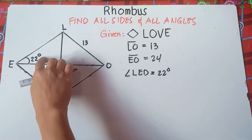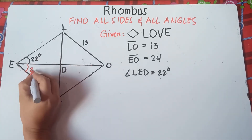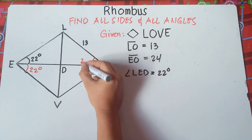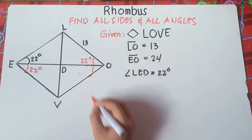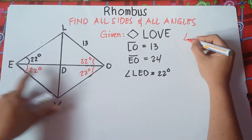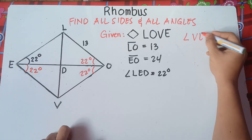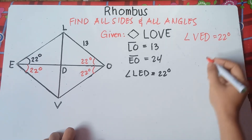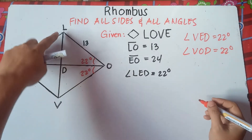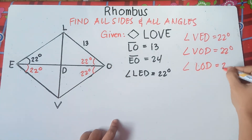So therefore, if this is 22 degrees, this angle here is also 22 degrees. If this is 22 degrees, this is also 22 degrees, because opposite angles are congruent. So we can say that angle VED is equals to 22 degrees, and angle LOD is also equals to 22 degrees.